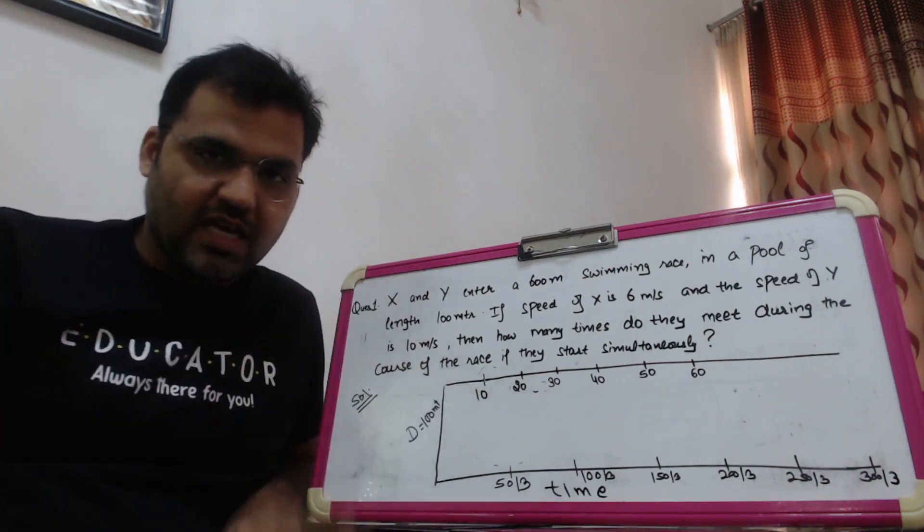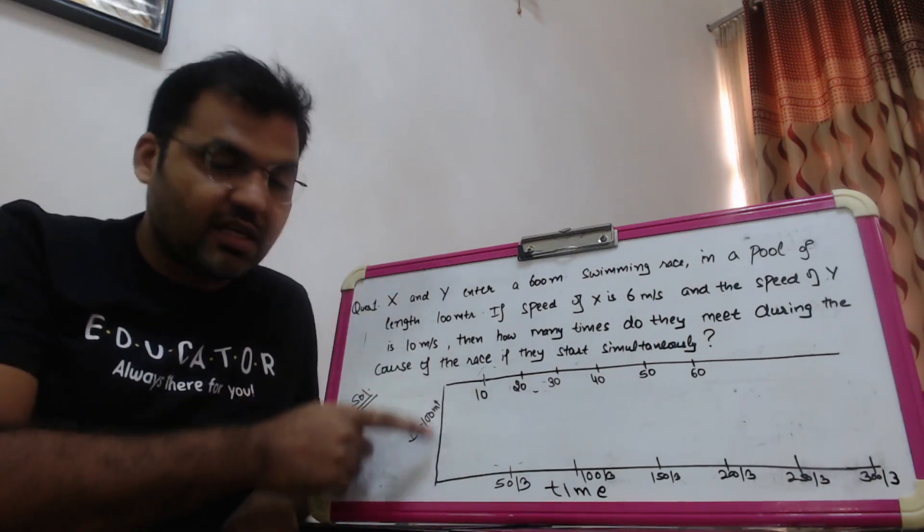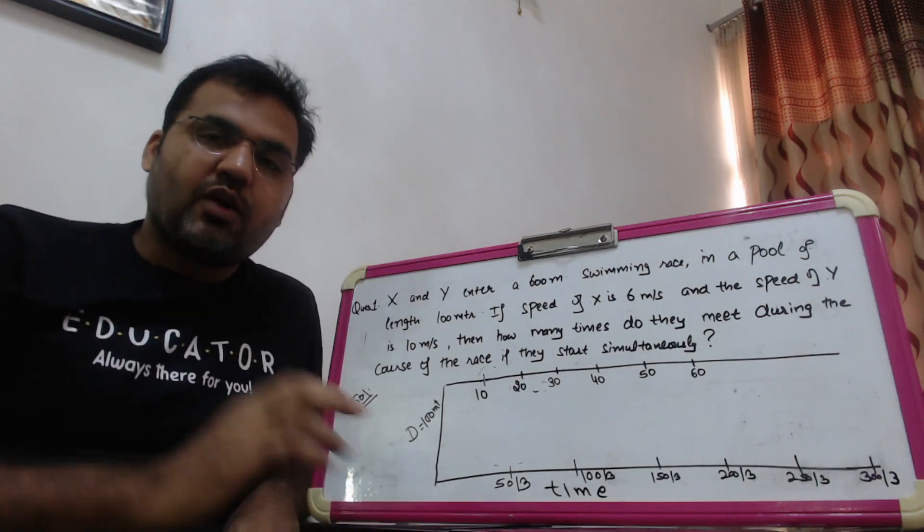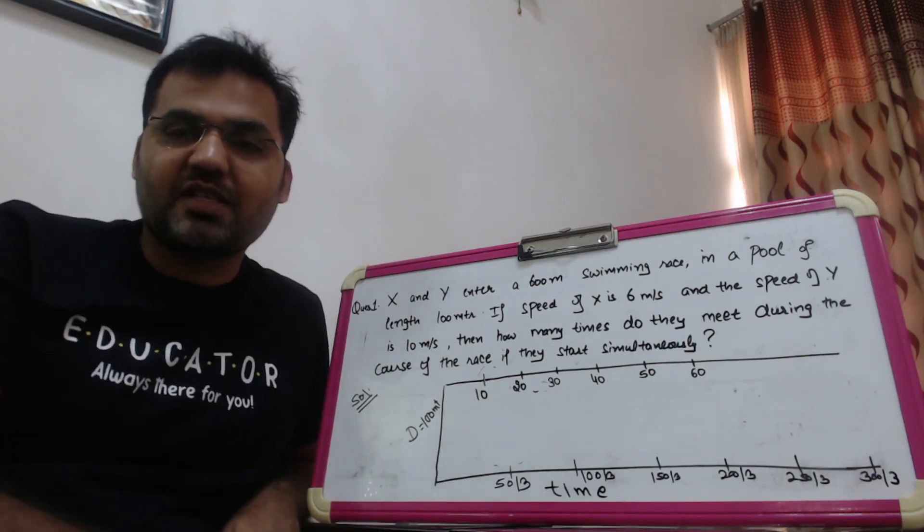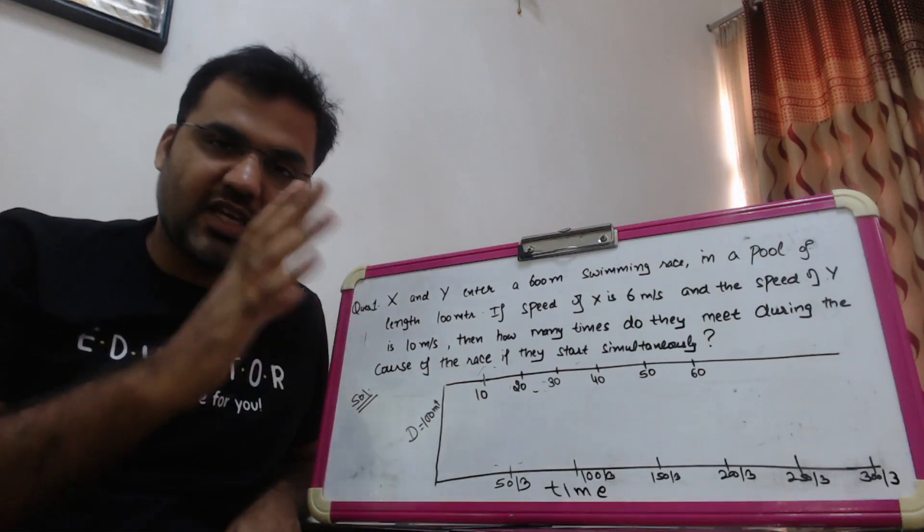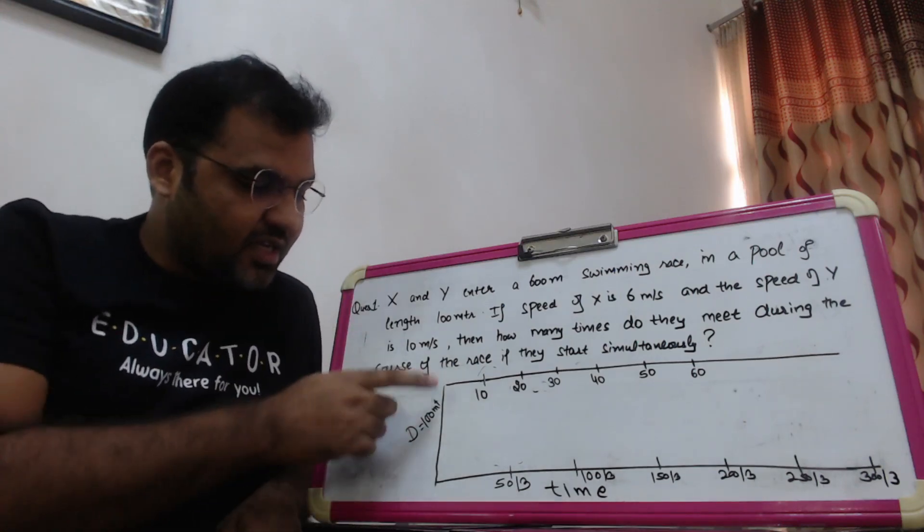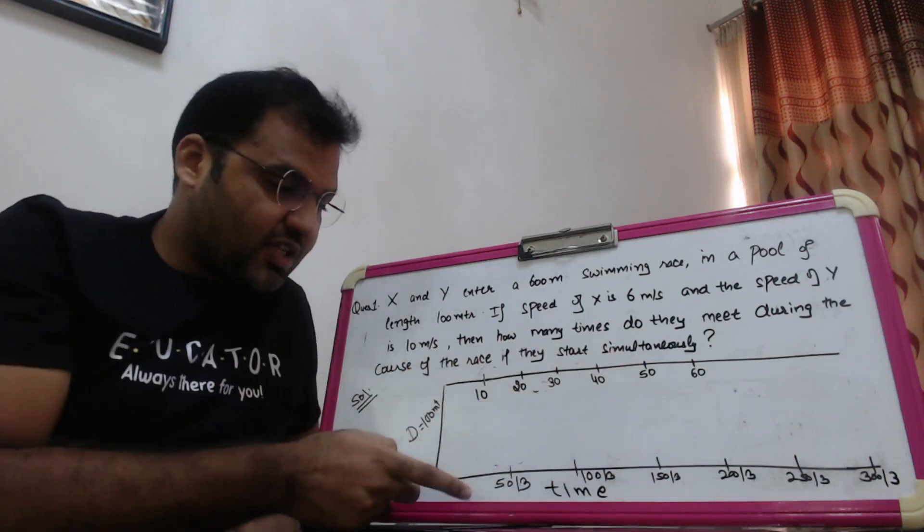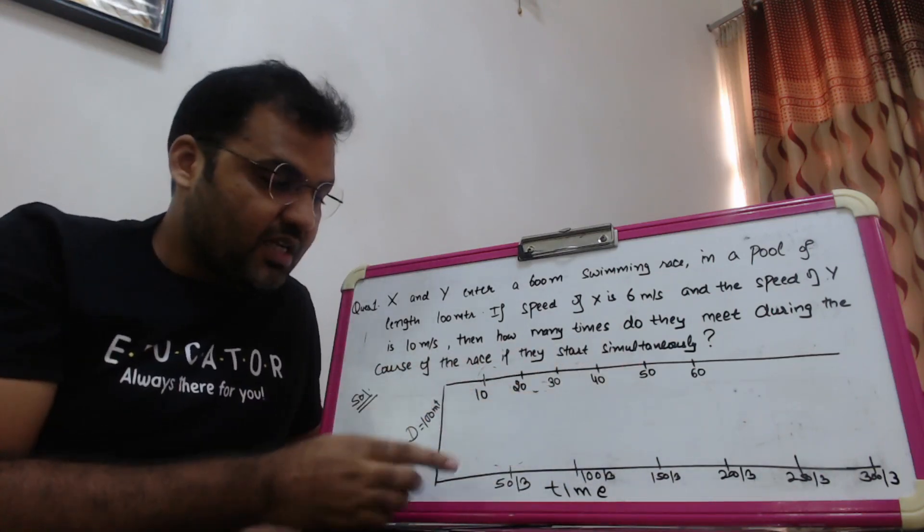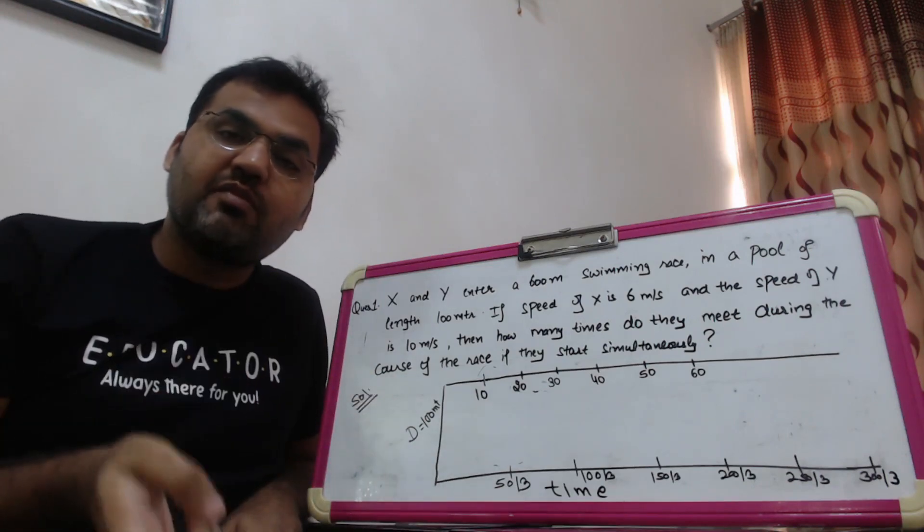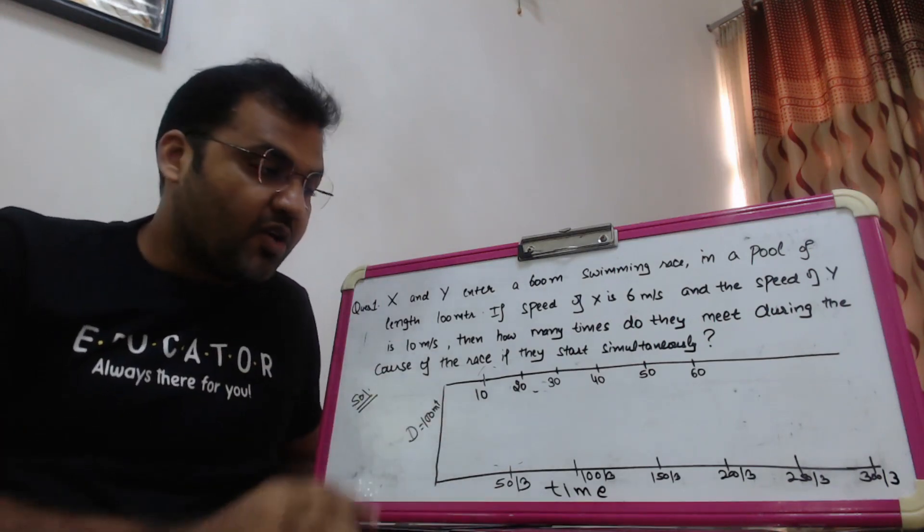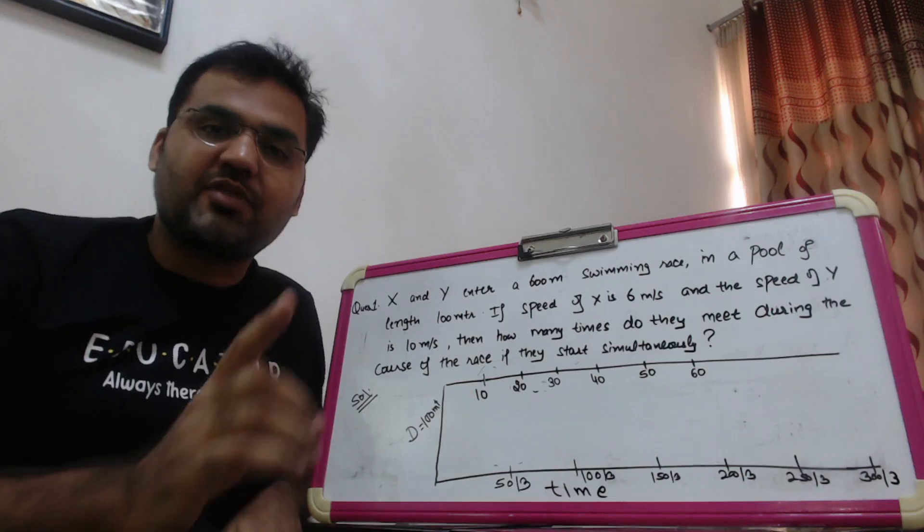With this method, you can solve questions very well within 2 minutes. What do we do? You make a distance versus time graph. I've taken distance here, the pool is 100 meters. Students feel uncomfortable with the graph method, but it's very simple. Distance versus time graph is very simple. I've taken distance here, this is our time graph. These two parallel lines - on one line I'll represent time taken by X, and on one line time taken by Y.